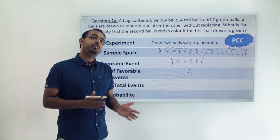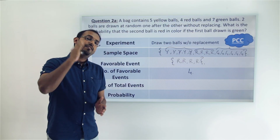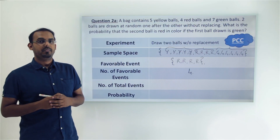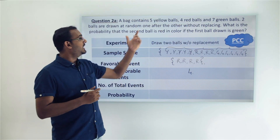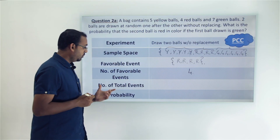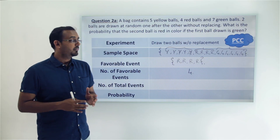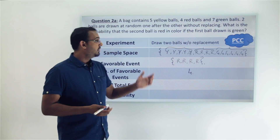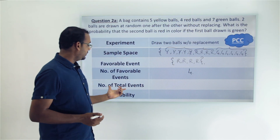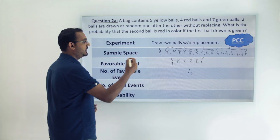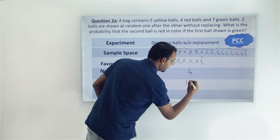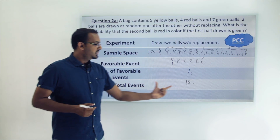The total number of events: when drawing the first ball, it was 16, but since one ball has been kept aside, the total number of events that can now happen are 15. The sample space contains 15 different balls, so the total number of elementary events is 15.